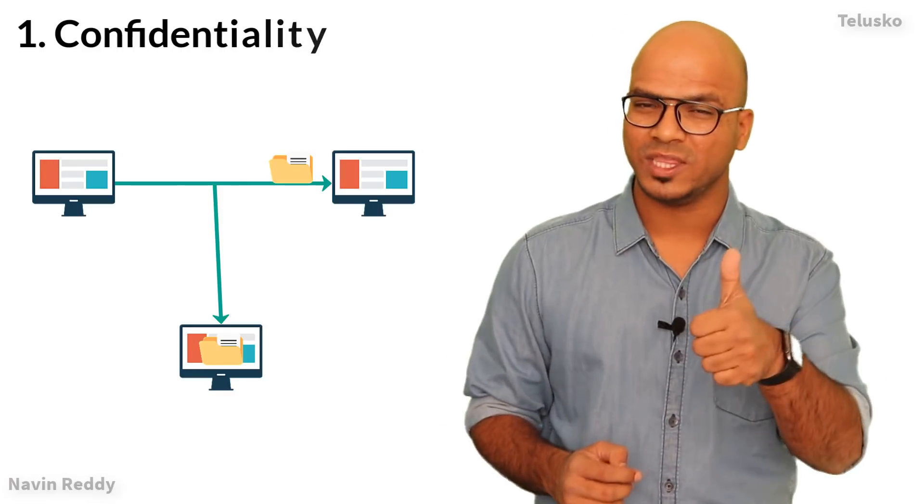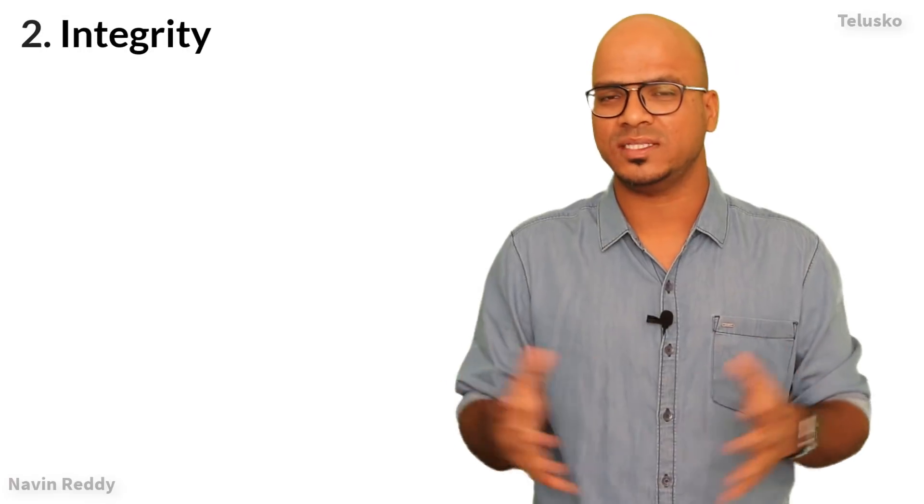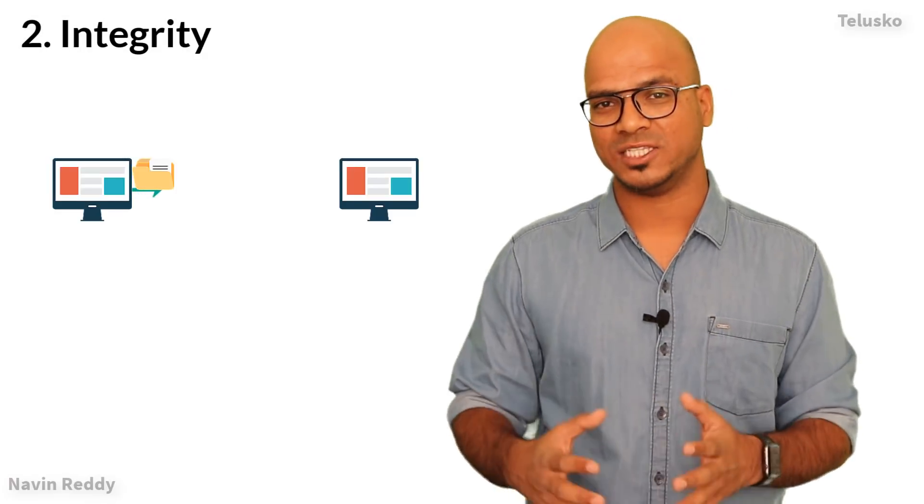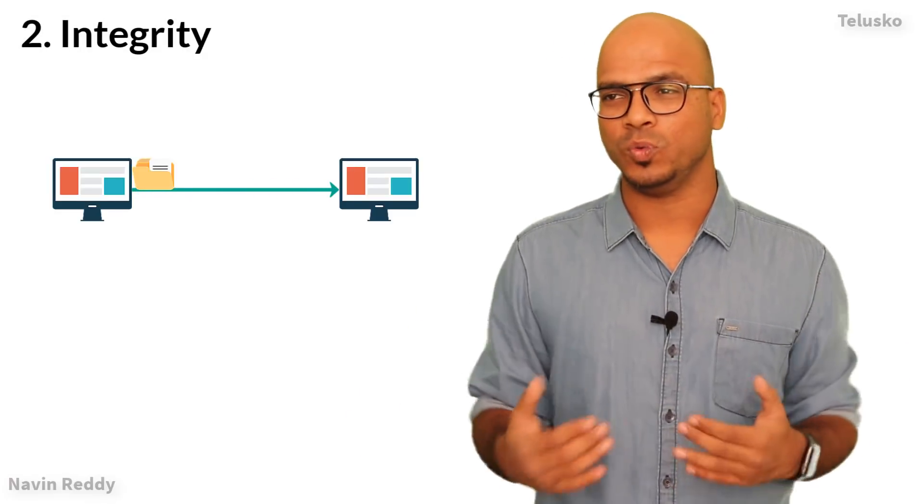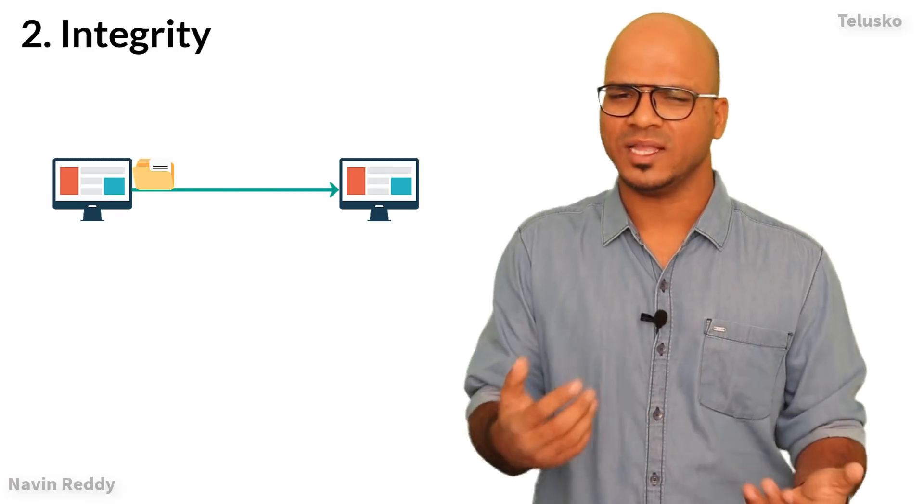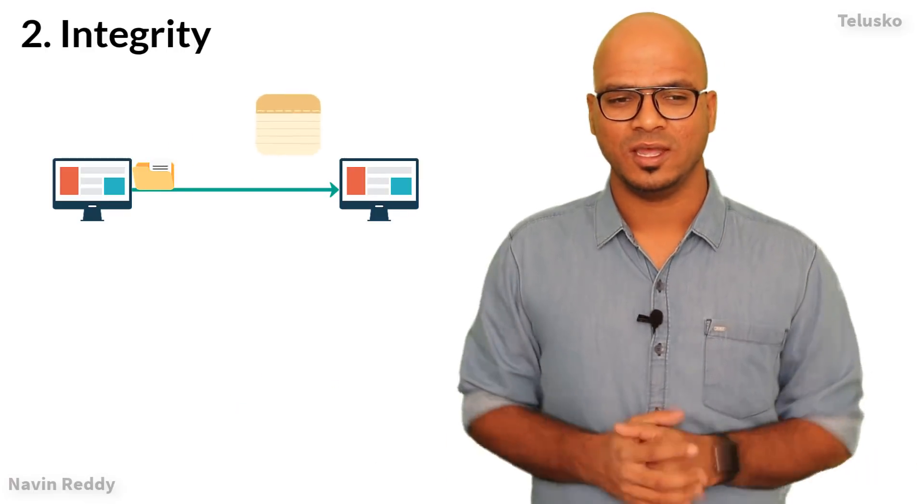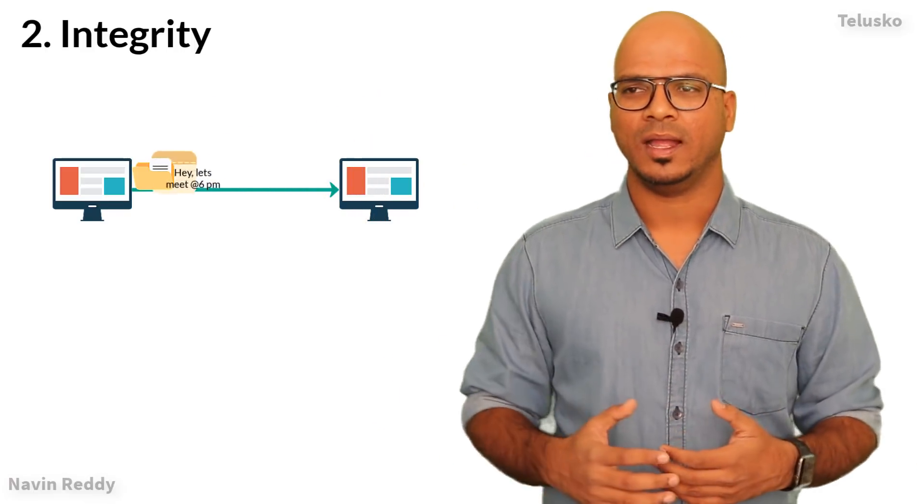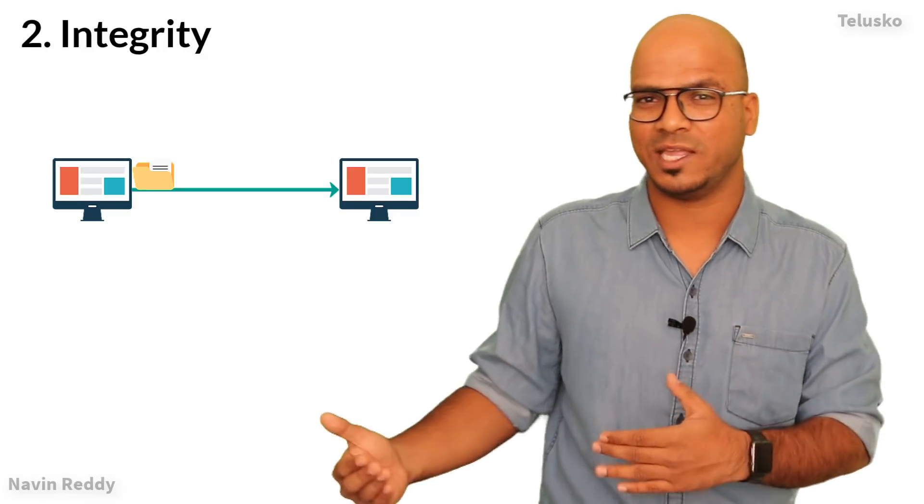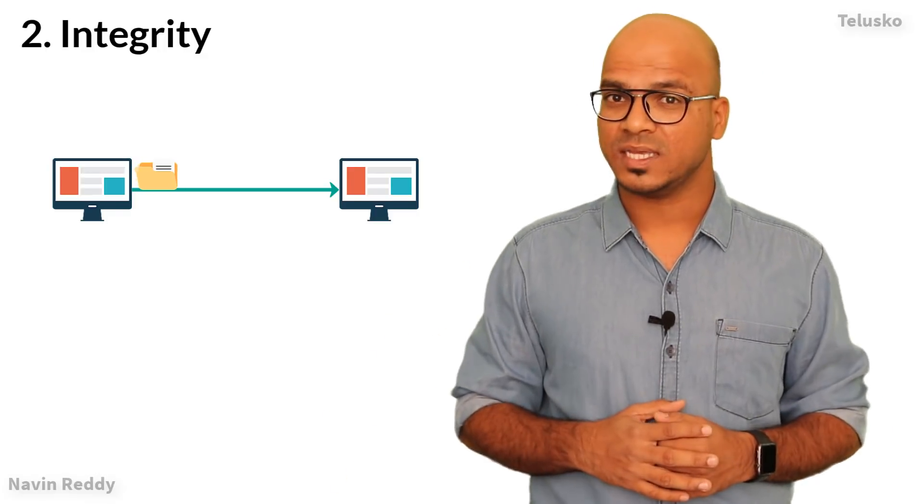The next thing we want to achieve is integrity. So let's say A is sending a message to B, and of course we don't want anyone to see that message. But let's say it's a very simple message: 'hey let's meet at 6 PM'. Now if someone else is able to see that message, that's fine with me.